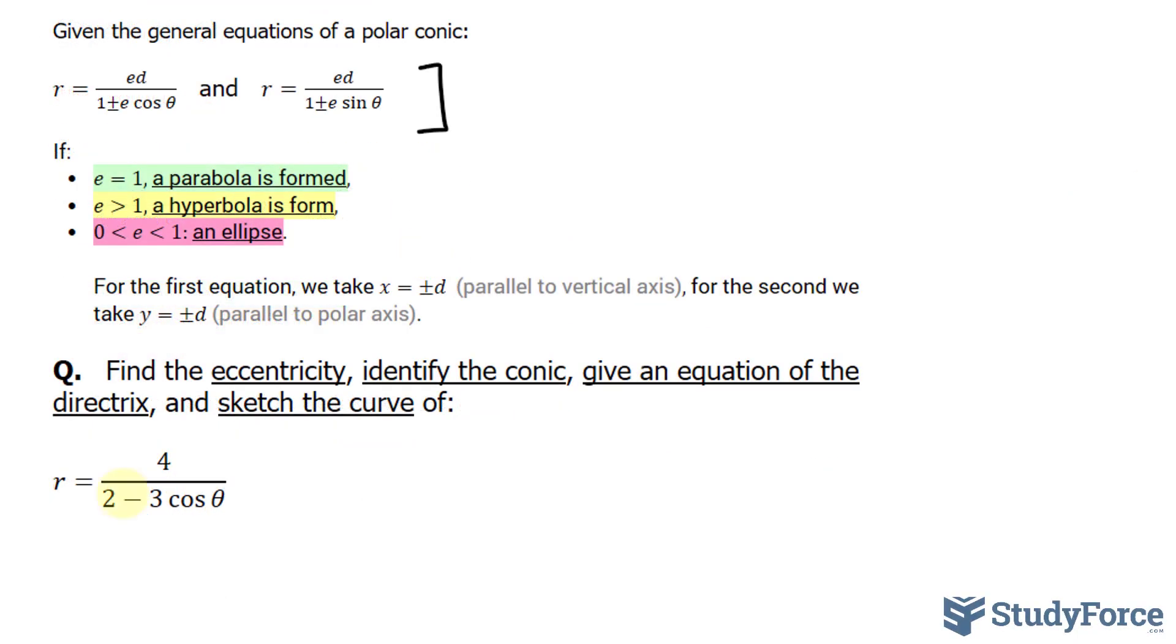So what I'll do to make this look like one of those, where we have one plus or minus a number times cosine, is I'll factor out a two from the denominator. So I have r equals four over two factored out, one minus three over two, which is equivalent to 1.5, cosine theta.